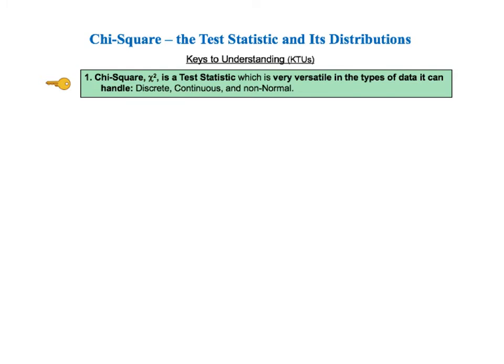As usual in the book and in these videos, we'll go quickly through a list of keys to understanding, or KTUs, to give you the overall picture on one page. And then we'll go into detailed explanations of each of the keys. For this video, there are five KTUs. The first key to understanding tells us that chi-square is a test statistic which is very versatile in the types of data it can handle: discrete, continuous, and non-normal.